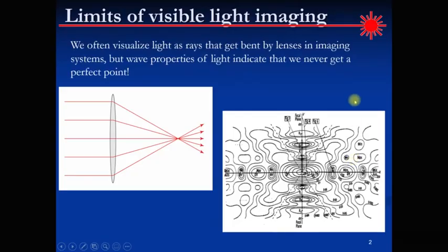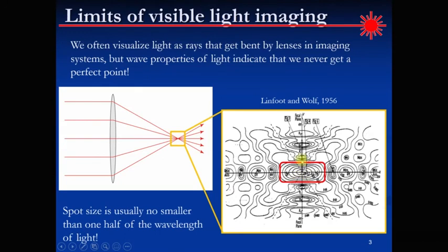To give a little context here, you've probably seen pictures of light as rays that get bent by lenses and imaging systems. If you want to model an imaging system with multiple lenses, you can draw the rays through the whole system. But the ray picture implies we focus light to a perfect point. The wave properties of light result in us never getting an ideal perfect point — we get a spread-out blob of light that is of finite size, and that spot size is usually no smaller than one half of the wavelength of light.